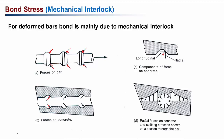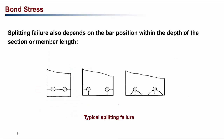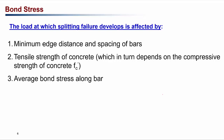Splitting failure takes place when there is insufficient cover or bars are placed too close together. Different kinds of splitting can occur: when bars are too close to each other and to the side, a side splitting failure occurs; when bars are too close to the corners, a corner splitting failure occurs; and if too close to the base, a bottom splitting failure occurs. The load at which splitting failure develops is affected by the minimum distance and spacing of the bars, the tensile strength of the concrete (which depends on compressive strength), and average bond stress along the bar.